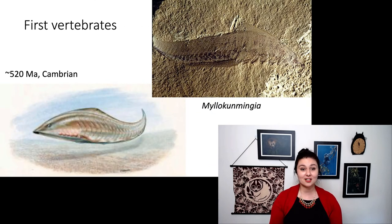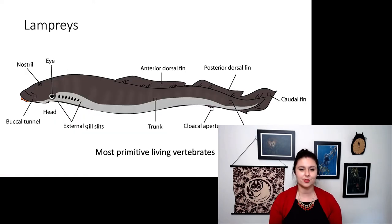Our first vertebrates, they actually did show up in the Cambrian about 520 million years ago. Unfortunately, they're like the most boring animals that existed during the Cambrian explosion are Myllokunmingia here. Kind of just this boring fish-like creature, but you can see the impressions of their dorsal nerve cord. Lampreys, they are the most primitive living vertebrates and are similar in some ways. You can see how simple they are. They have a few fins, but really they're just this tube that attaches and eats other fish.